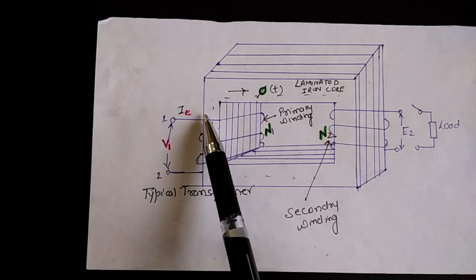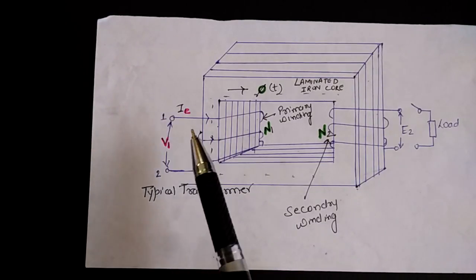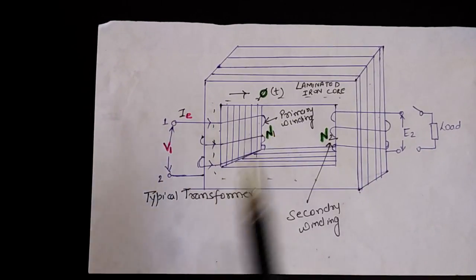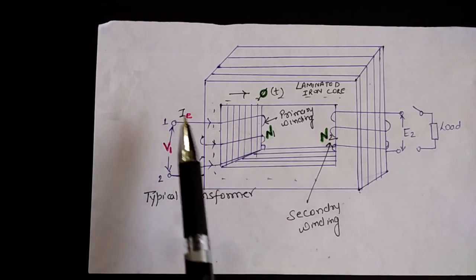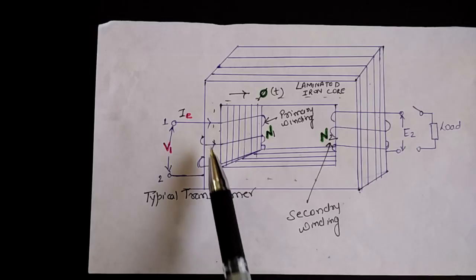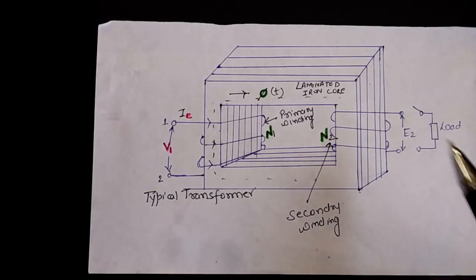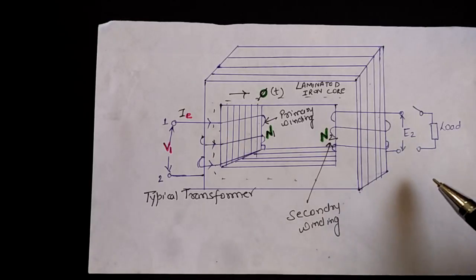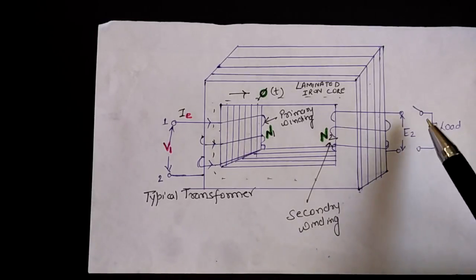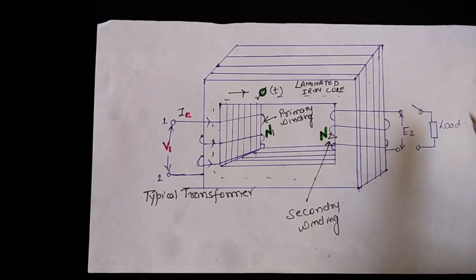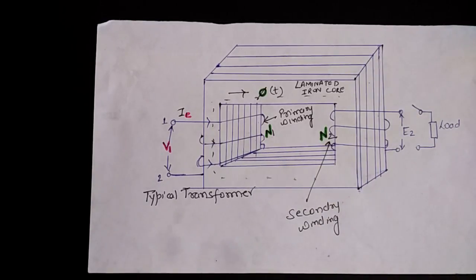Now what will happen is this primary current Ie, the MMF, which is n1 into Ie, this MMF will set a flux phi in the core of the transformer. As we are talking about the transformer on no load, it means the switch is open and the transformer is at no load.